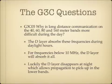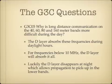Why is long-distance communication on 40, 60, 80, and 160 meter bands more difficult during the day? The D layer absorbs these frequencies during daylight hours. Remember: D equals daylight — the D layer exists during daylight hours. For frequencies below 10 MHz, the D layer absorbs the signal. Fortunately, the D layer disappears at night when the sun goes down, which allows propagation to pick up in the lower bands.